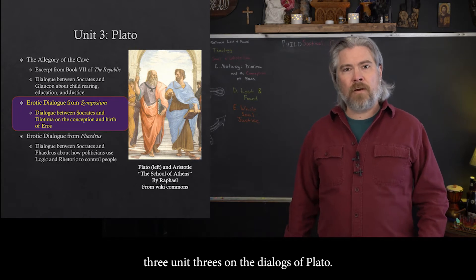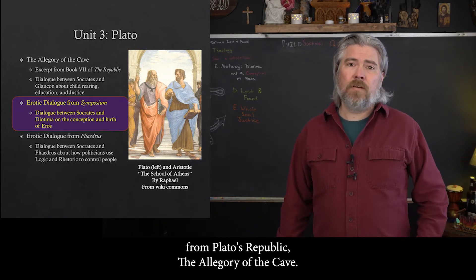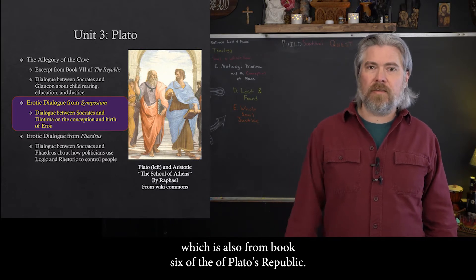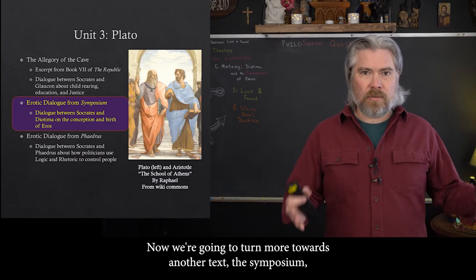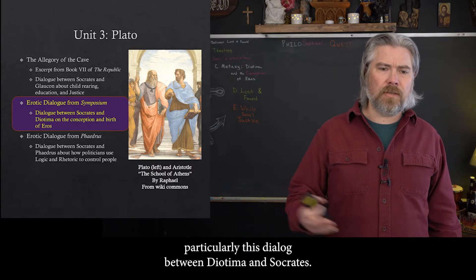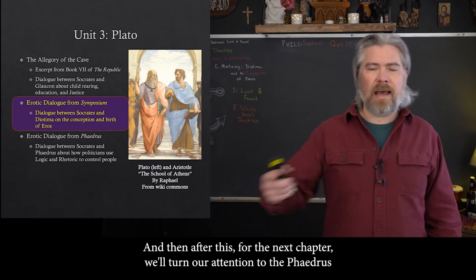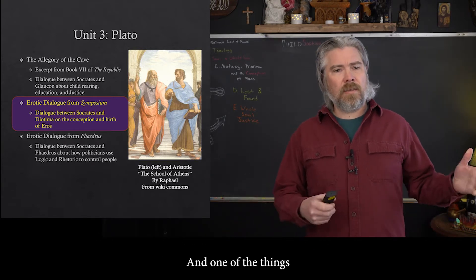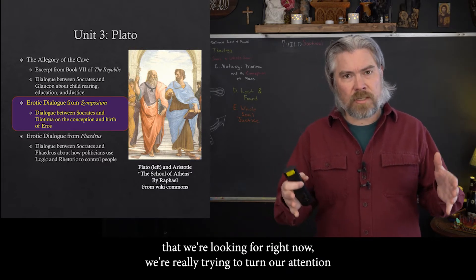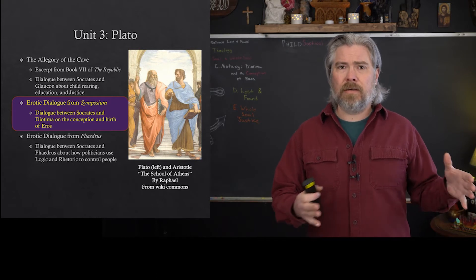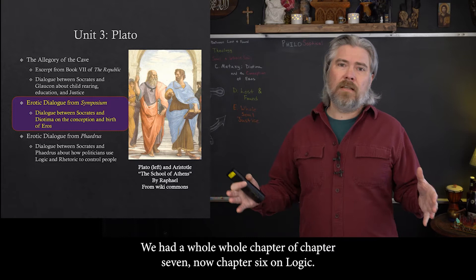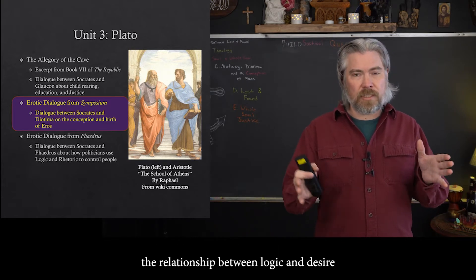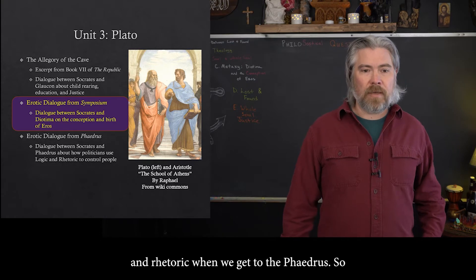Unit 3 is on the Dialogues of Plato. We've already looked at an excerpt from Plato's Republic — the Allegory of the Cave — and previously the Divided Line from Book 6. Now we're turning to the Symposium, particularly the dialogue between Diotima and Socrates. After this, for the next chapter, we'll turn to the Phaedrus dialogue. Right now we're really trying to turn our attention to Eros. In the past we looked at logic; now we're turning to desire. When we get to the Phaedrus, we'll look at the relationship between logic, desire, and rhetoric.